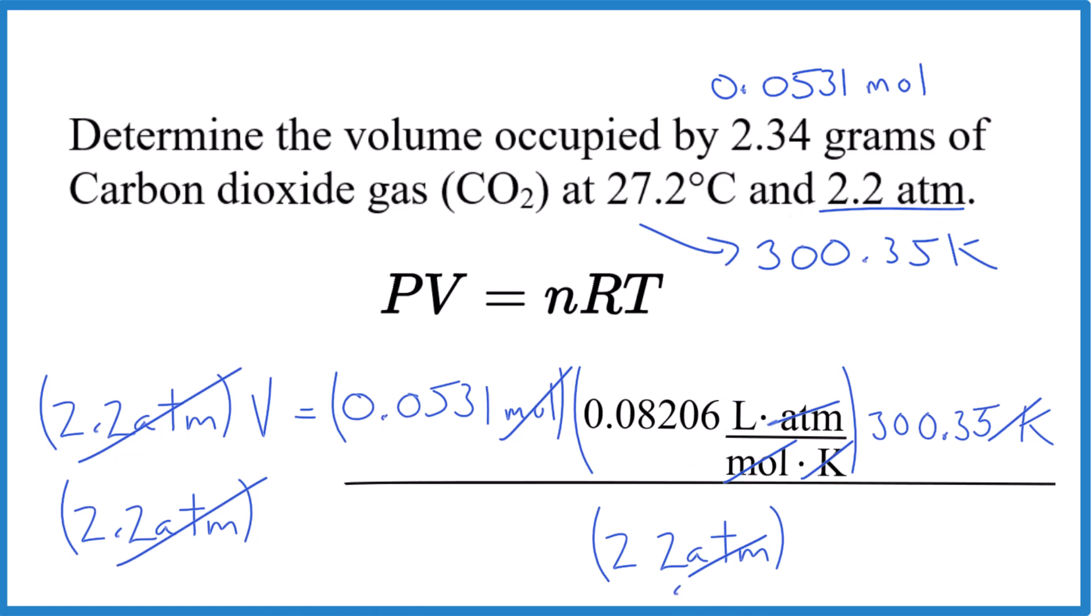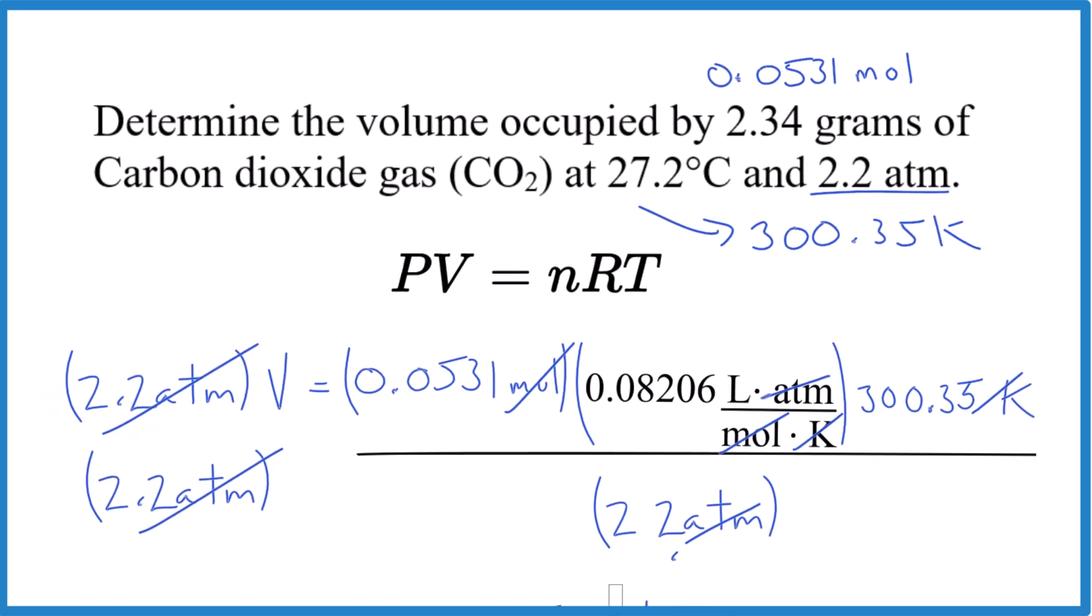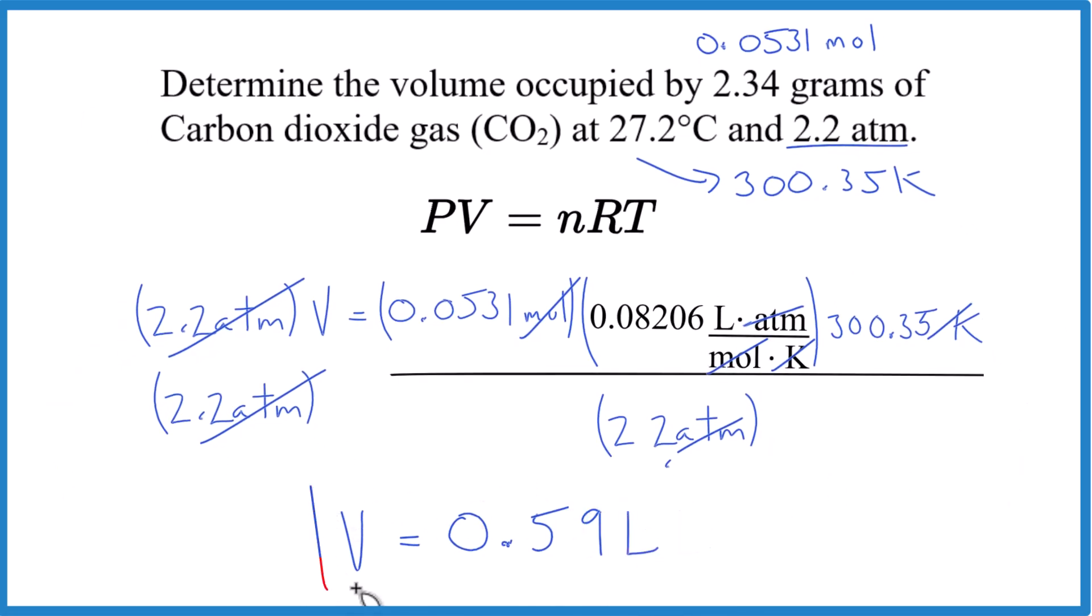Looks like we only can have two significant digits here, so let's get rid of the four. That's our final answer: 0.59 liters. The key here: make sure you're working in Kelvin, change your grams to moles, and your R should match your units. We had ATM. It's Dr. B, thanks for watching.